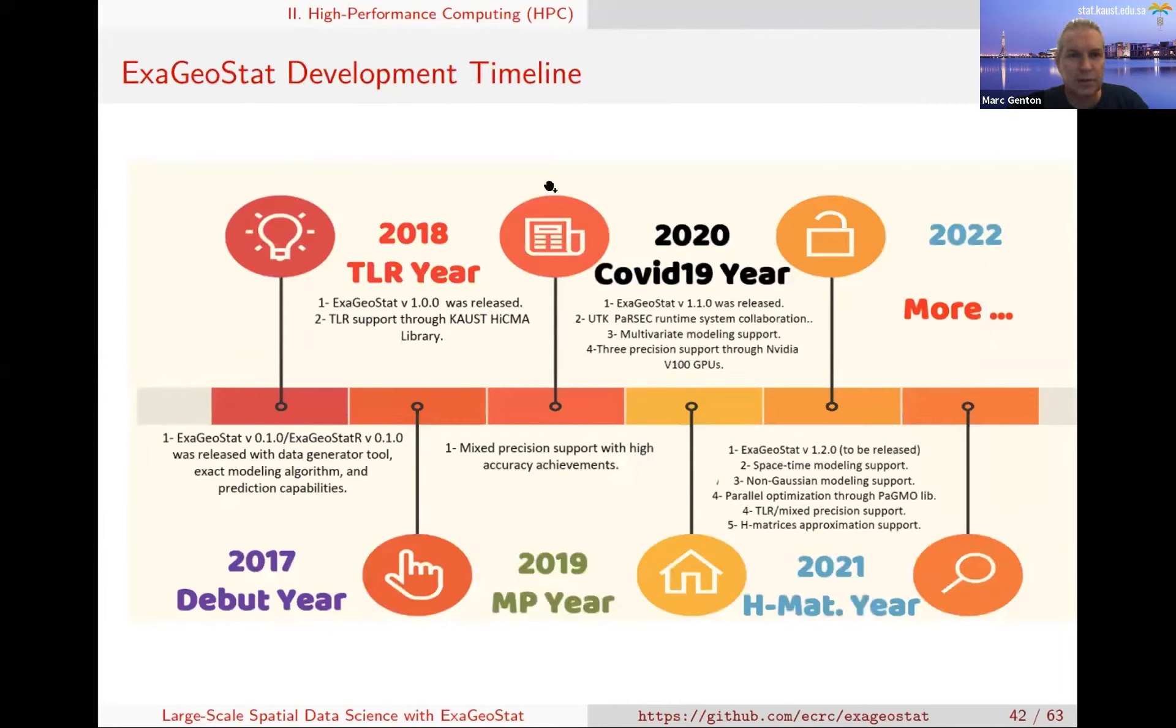I wanted to tell you about the development timeline. This is not something we started last week. We started in 2017, the first version was released doing basic univariate Gaussian likelihood. In 2018, we brought tile low rank approximation using different libraries developed at Kaust. In 2019, we implemented mixed precision support. 2020 was the COVID year, but we didn't stop - we brought multivariate version, three precision, and a runtime system. This year we brought space-time modeling, some non-Gaussian distributions, parallel optimization, and other approximations such as H matrices. We plan to continue over the years.